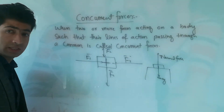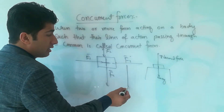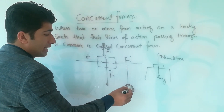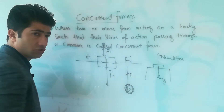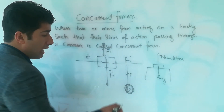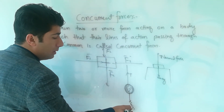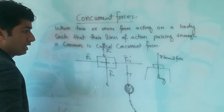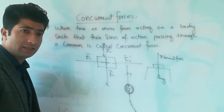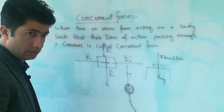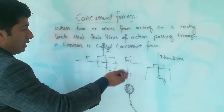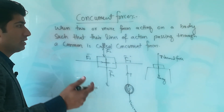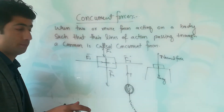Normal force and weight — dho no forces concurrent forces hai. Agar aap eek bulb ko lhe aur is bulb per dho forces act kerethe hai: one is the tension of the wire, and the second one is the weight of the bulb. Dho no forces ki joh line of action hai woho same hai, is liye hum dho no forces ko concurrent forces kehte hai. So concurrent forces: when two or more forces acting on a body and the lines of action passing through a common point is called concurrent forces.